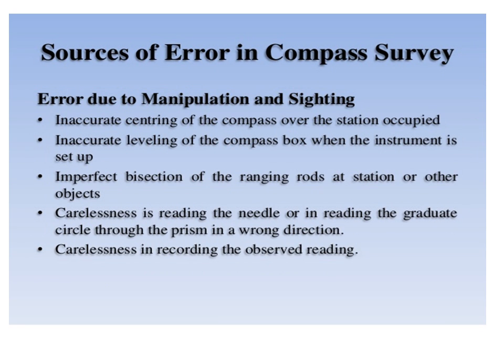Error due to manipulation and sighting includes: inaccurate centering of the compass over the occupied station; inaccurate leveling of the compass box when the instrument is set up; imperfect bisection of the ranging rod at the station or other object; and carelessness of the observer while recording the readings and observed bearings.